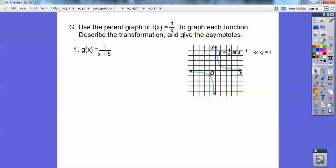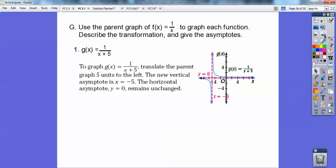So here's number 1. g of x is 1 over x plus 5. When the number is hanging out with the x like this one is, then you do the opposites. So I'm going to take this graph and just shift it to the left 5. It's going to be this graph to the left 5. There it is right there. Can you see it? It's the same graph but to the left 5. So your new vertical asymptote is x is equal to negative 5. Your horizontal is still y equals 0. It doesn't change.